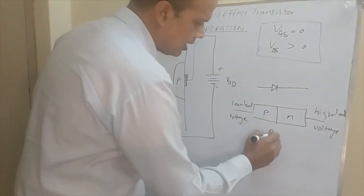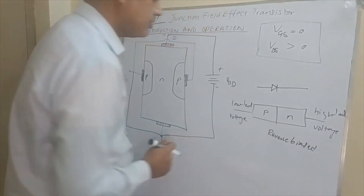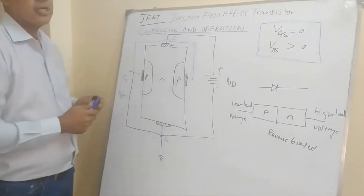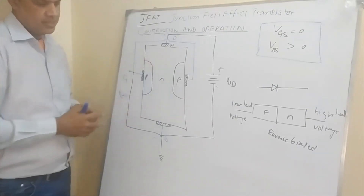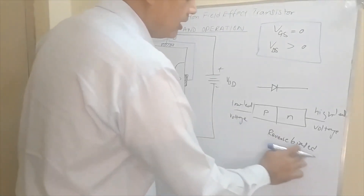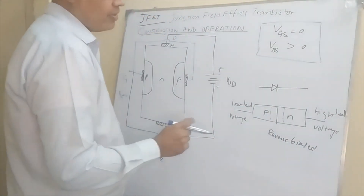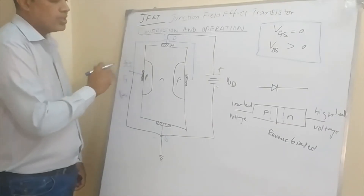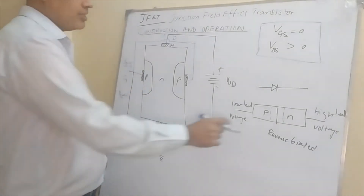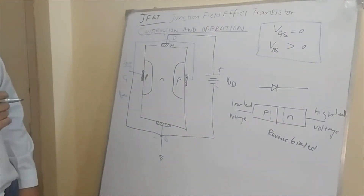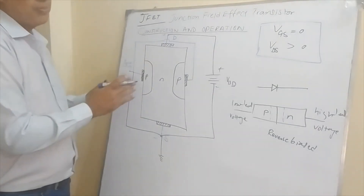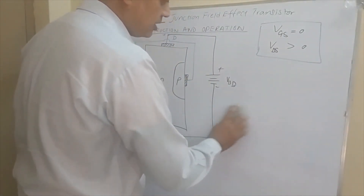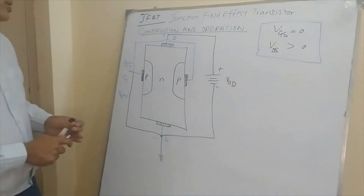Because the junction is reverse-biased, it will create a depletion region. With reverse bias, no current can flow through the gate. The important thing to highlight is the shape of this depletion region. It will create a non-uniform depletion region — wider on the upper side near the drain and narrower on the lower side near the source.